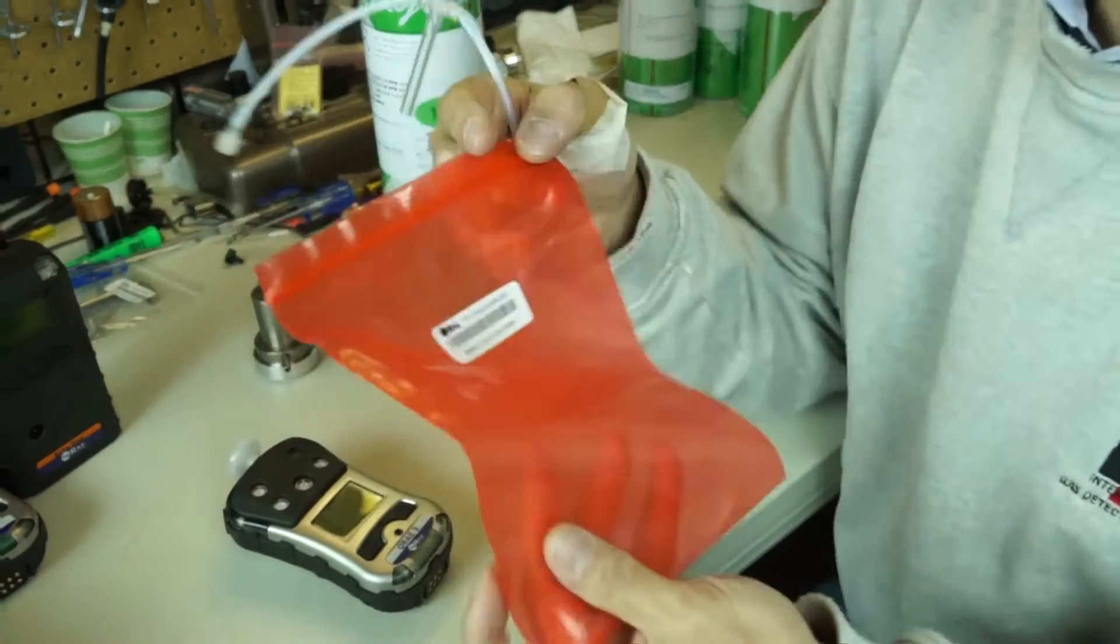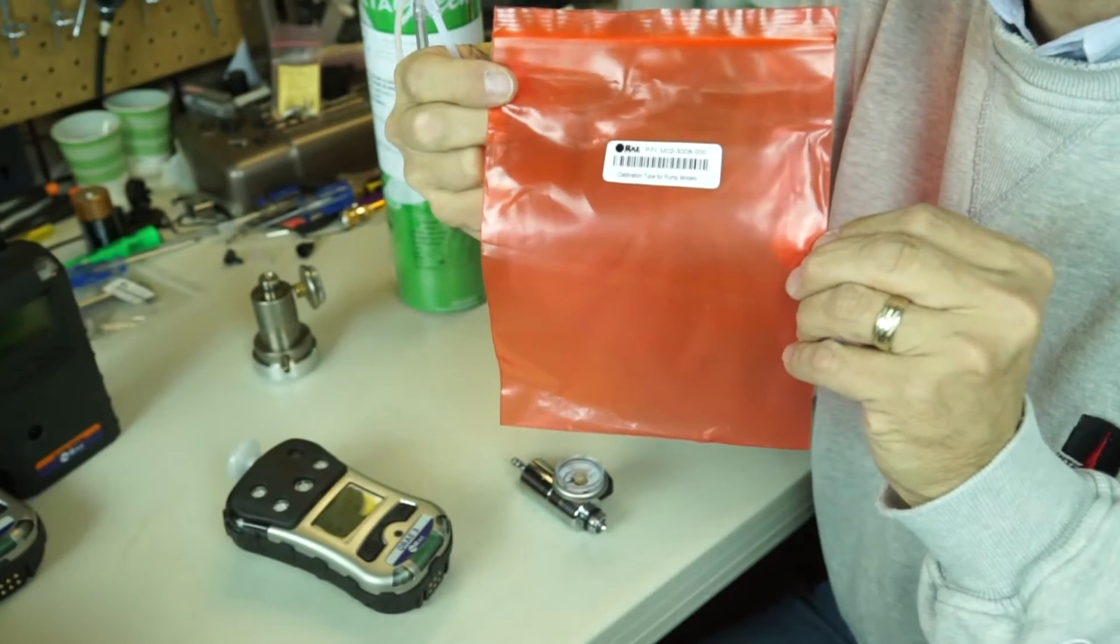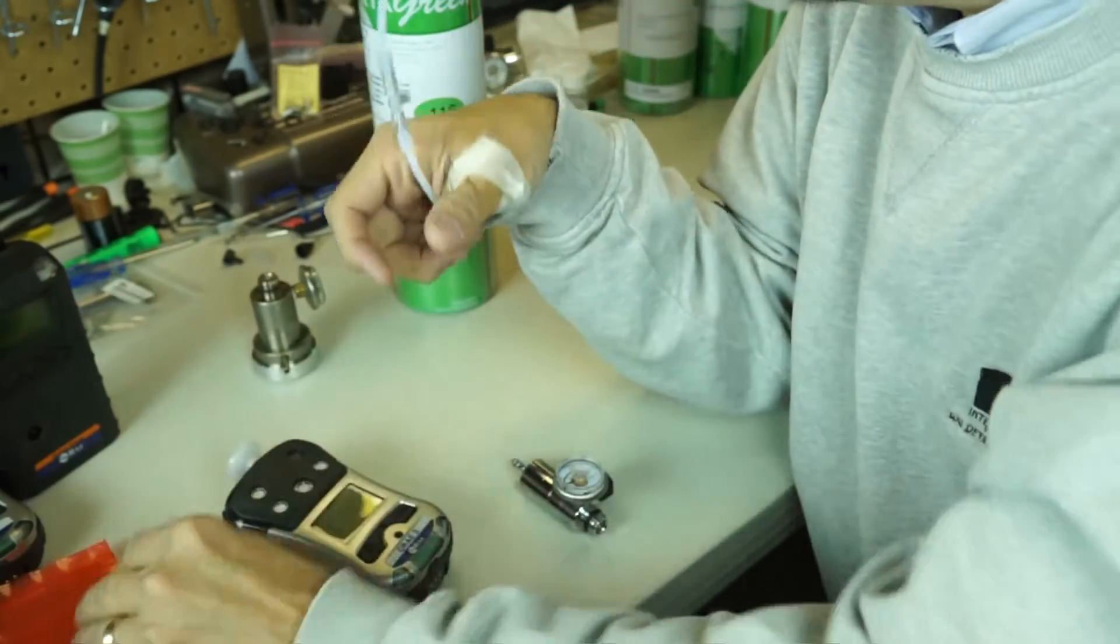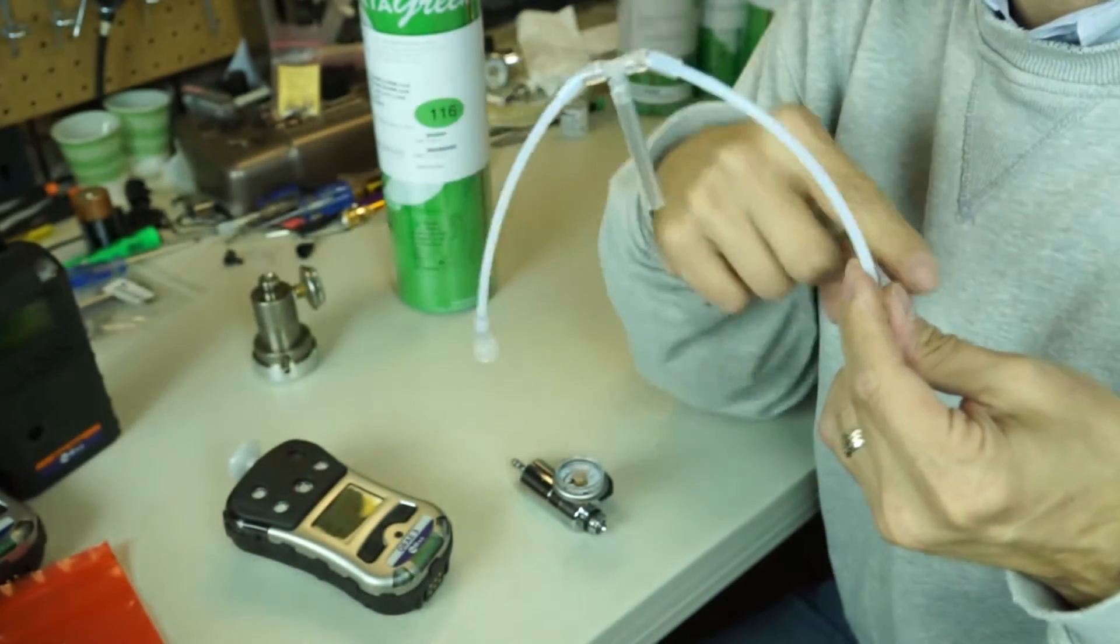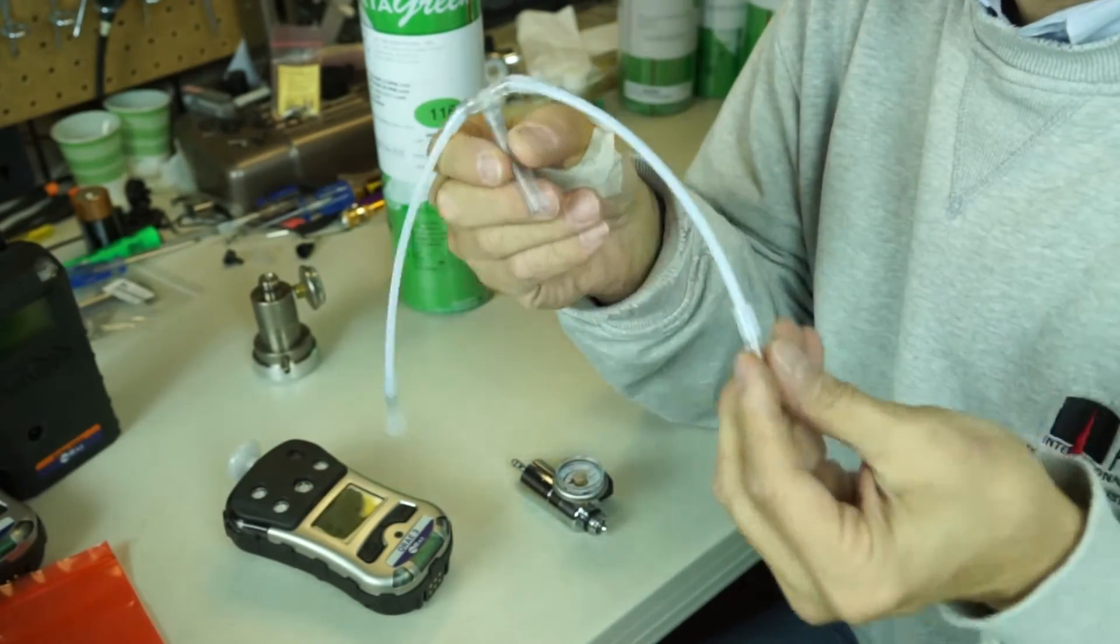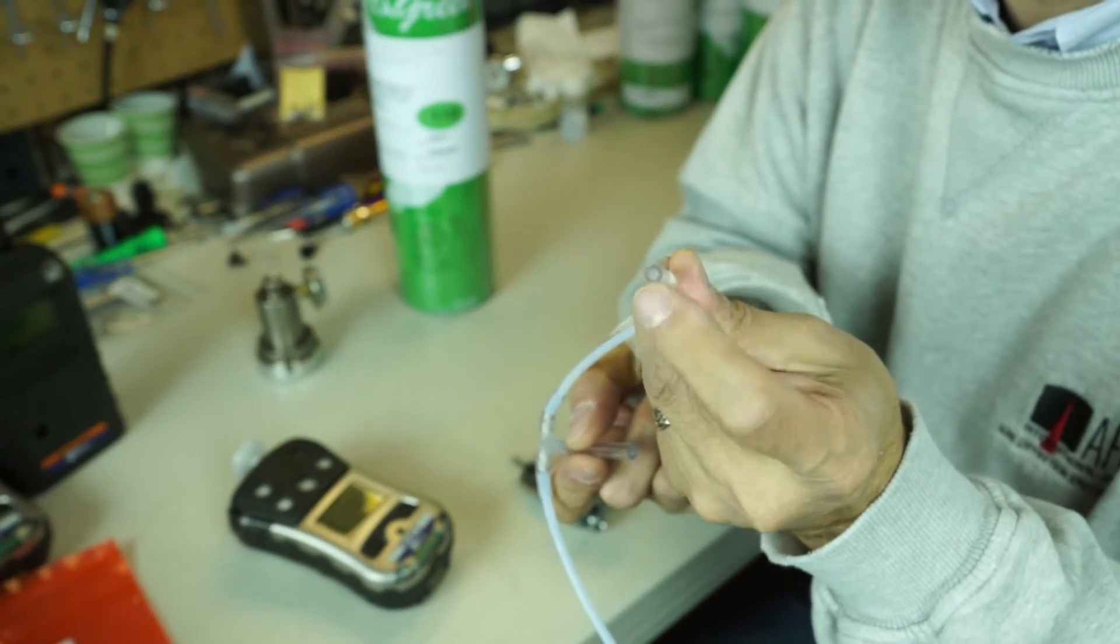When you purchase your Q-Ray 3 you got a little T, a calibration T came in this little baggie just like this right here. And the calibration T just consists of some tubing and it's a T.